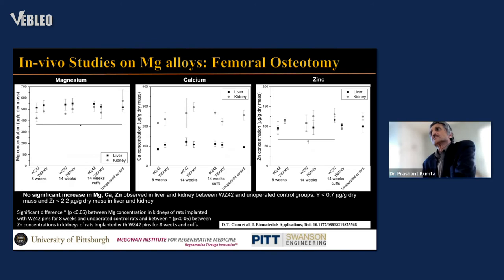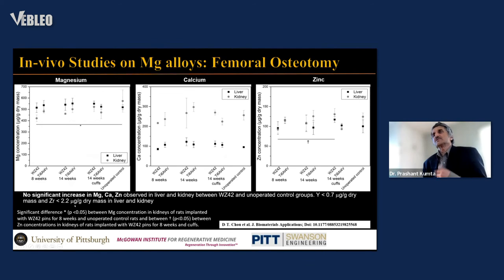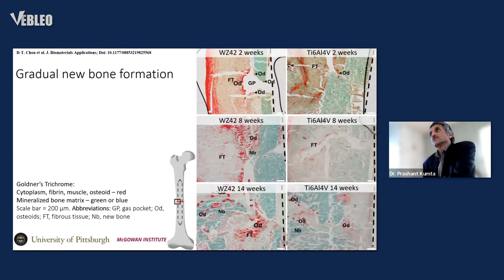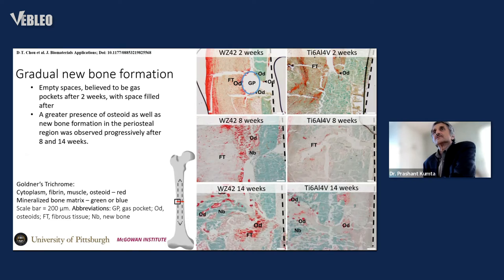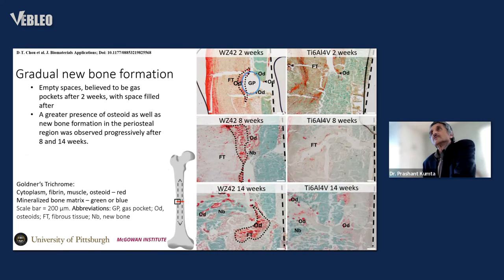Magnesium, calcium, and zinc concentrations showed no significant increase in the liver and kidney between the alloy and unoperated groups. Yttrium and zinc were well below 0.7 micrograms per gram and zirconium was less than 2.2 micrograms per gram, confirming no accumulation of alloying elements in the body. New bone formation was observed — gradual new bone formation after 8 and 12 weeks — clearly seen with the Goldner's trichrome stain showing new bone or osteoid formation, indicating favorable bone formation from these alloys even with initial gas pockets.